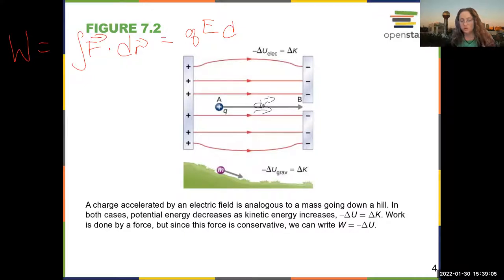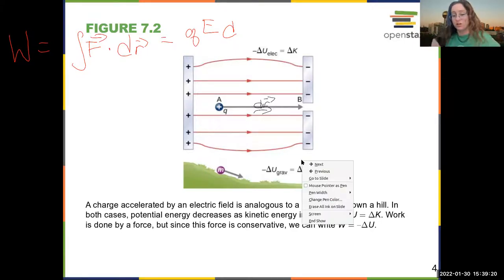So you can think of this as analogous to the gravitational potential energy. When you have a positive charge going in a certain direction, it's going in the direction where the potential energy is decreasing. So it's rolling down, like rolling down a hill.